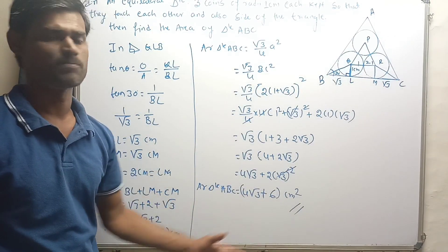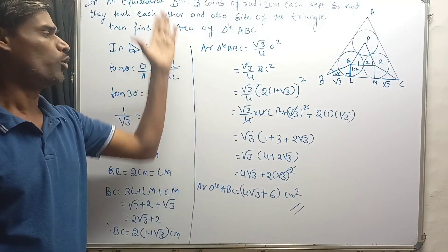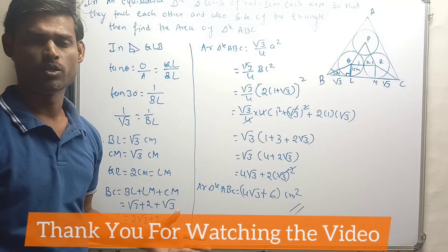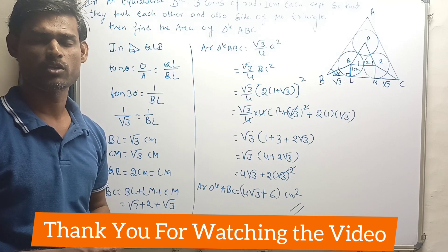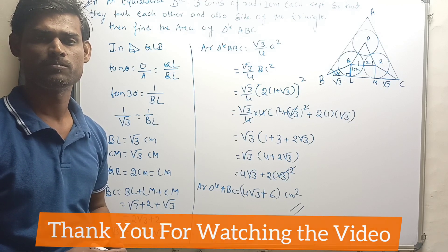So the area of triangle ABC equals 4√3 + 6 square centimeters. That is the solution. I hope you got this solution — thank you for watching the video.